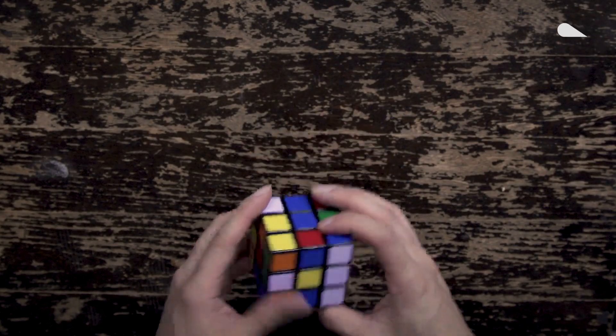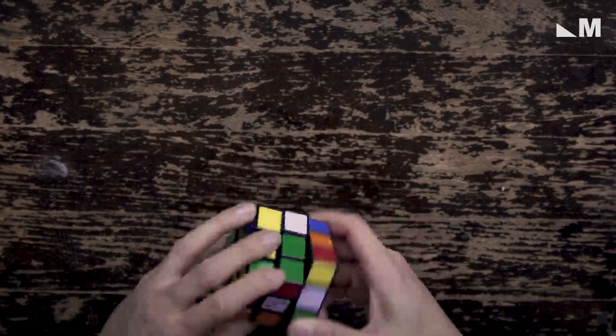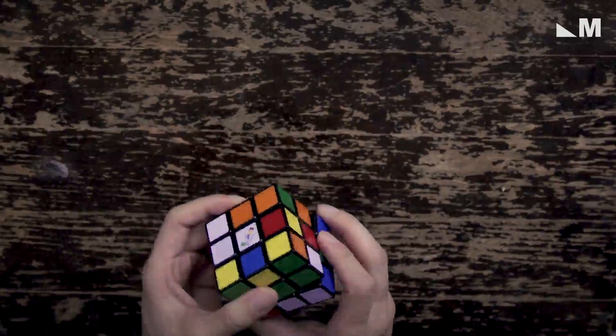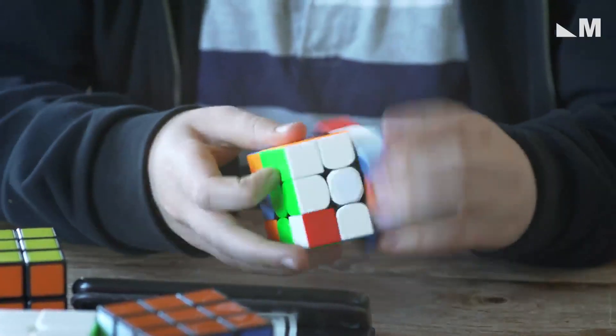The Rubik's Cube looks like a simple kid's toy, but anyone who's tried to line up the block's colors knows how challenging it is, at least for the average human.